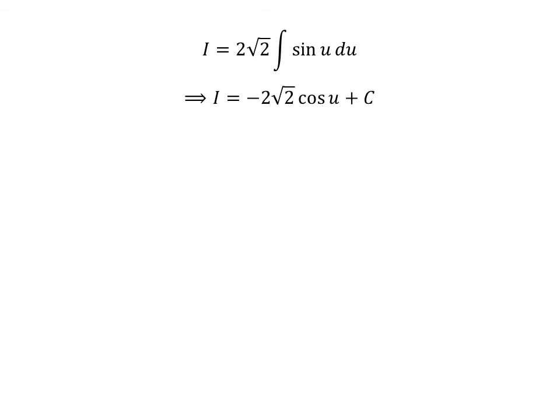The antiderivative of sine of u is minus cosine of u. So I equals minus 2 times square root of 2 times cosine of u plus capital C. Capital C is an arbitrary constant of indefinite integration. Never forget to add this constant.